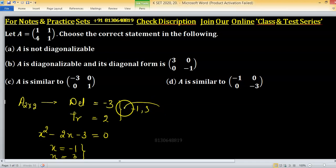So eigenvalues are distinct, so it is diagonalizable over R and diagonal form is just diagonal elements of eigenvalues.